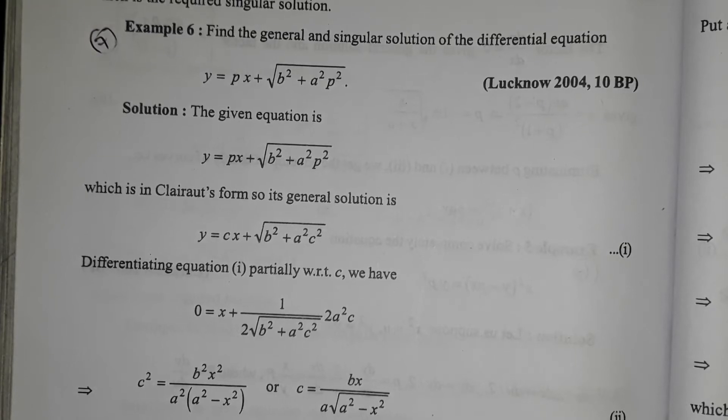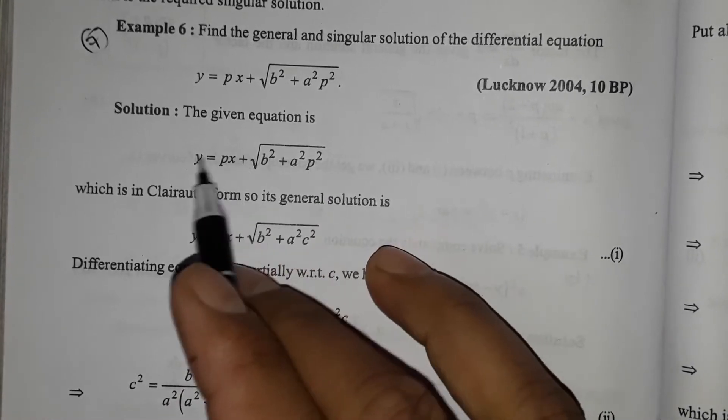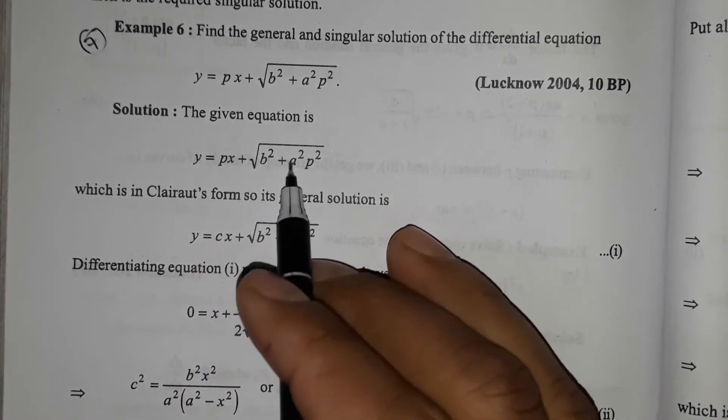Find the general and singular solution of the differential equation. The given equation is y equals px plus square root of b² plus a²p².